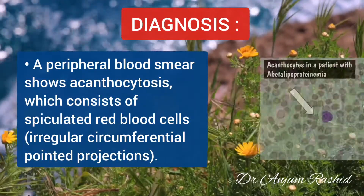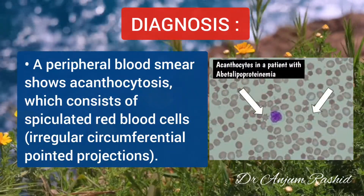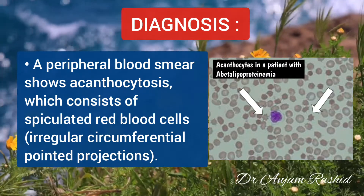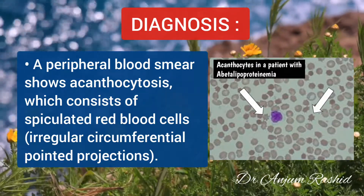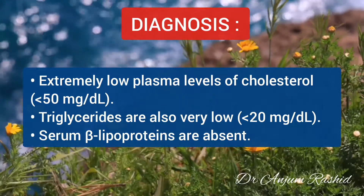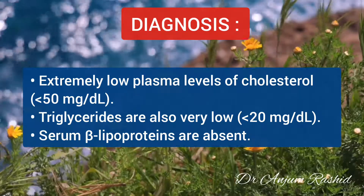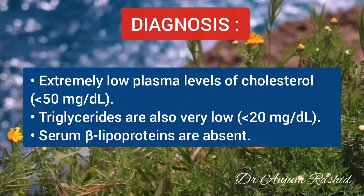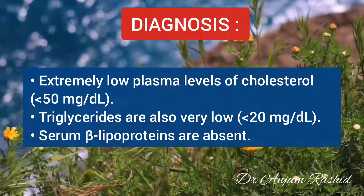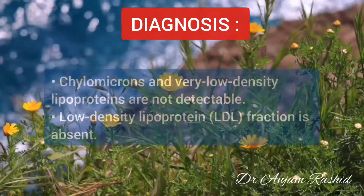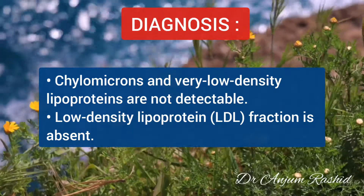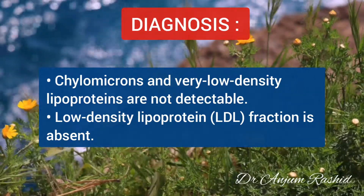Now the diagnosis. A peripheral blood smear shows acanthocytosis, which consists of spiculated red blood cells — that is, they have irregular circumferential pointed projections. There is an extremely low plasma level of cholesterol, usually less than 50 mg per deciliter. Triglycerides are also very low, less than 20 mg per deciliter. Serum beta lipoproteins are absent, chylomicrons and very low density lipoprotein are not detectable, and the low density lipoprotein fraction is absent.